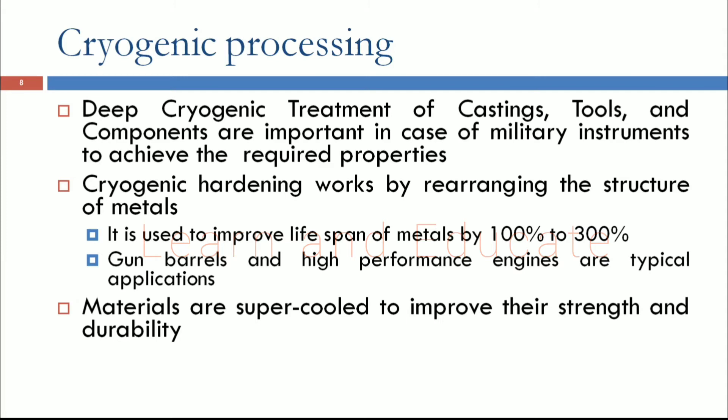Looking in detail at cryogenic processing: deep cryogenic treatment of castings, tools, and components in the manufacturing industry is important, especially for military instruments, to achieve specific properties. Cryogenic hardening works by rearranging the structure of the metal — such as FCC or BCC structures — and can improve the lifespan of metals by 100% to 300%. These treatments are specifically applied to gun barrels and high-performance engines in military vehicles.